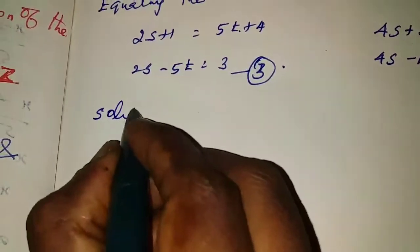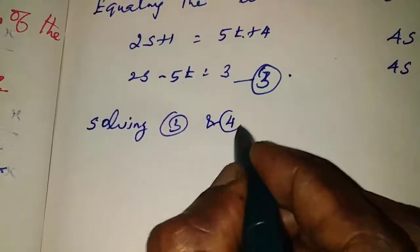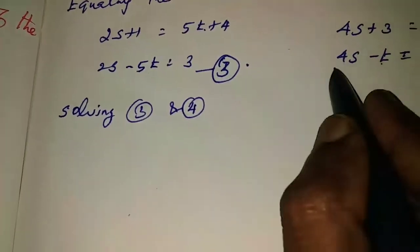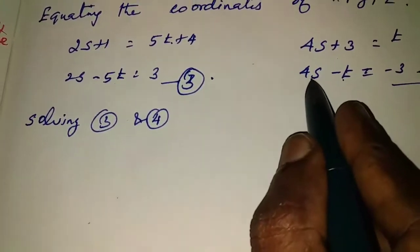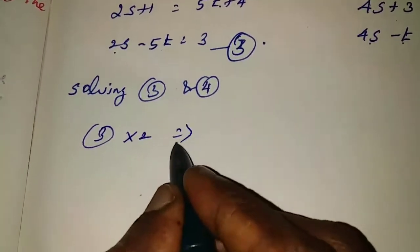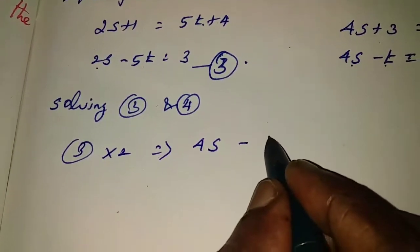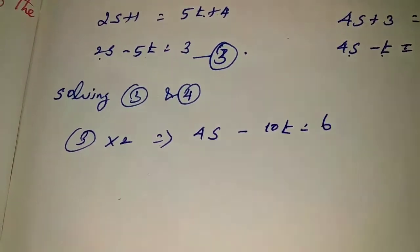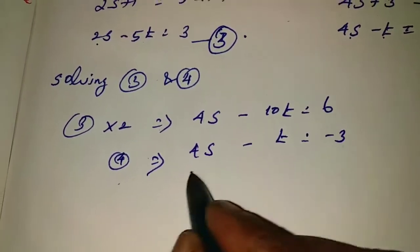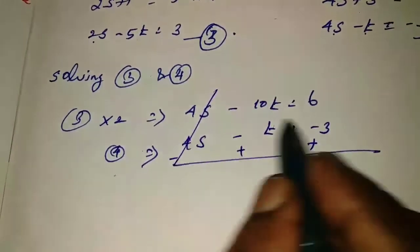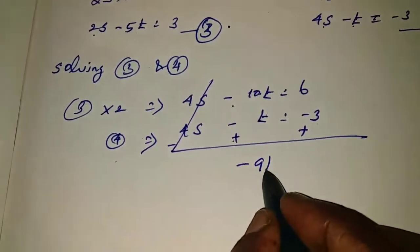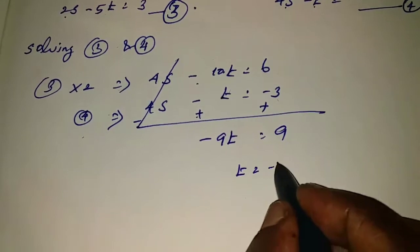Solving equations 3 and 4: equation 4 has only 1t and equation 3 has 2s. Multiply equation 3 by 2: 4s minus 10t equals 6. Equation 4: 4s minus t equals minus 3. Subtracting, changing the sign: minus 10t plus t gives minus 9t. So minus 9t equals 9, giving t equals minus 1.